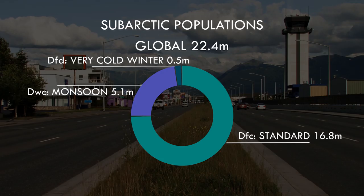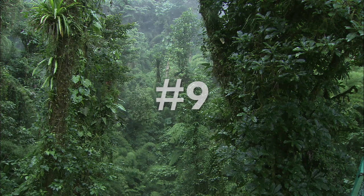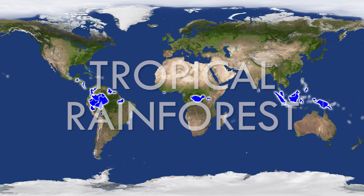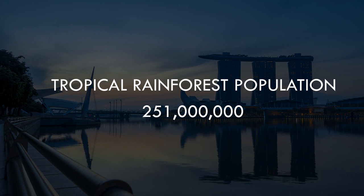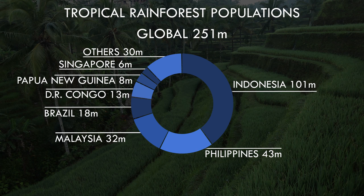At number 9, we switch from the coldest zones to one of the hottest — the year-round rain and warmth of the tropical rainforest. With a global population of just over a quarter billion, we are at last into an area that is home to a significant percentage of total human numbers. Almost half of them live in just one country, Indonesia, with most of the others also within South East Asia, and significantly fewer numbers in South America and Africa.